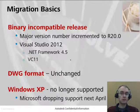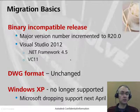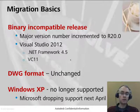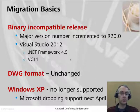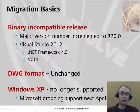Even though it's a binary incompatible release, the DWG format has remained unchanged, so you don't have to worry about changes in that format. Also, Microsoft have announced they're dropping support for Windows XP next April, which aligns with our release of AutoCAD at the end of March. So we too are dropping Windows XP, which is actually the reason why we can support .NET Framework 4.5.